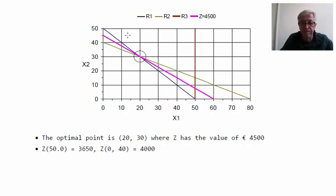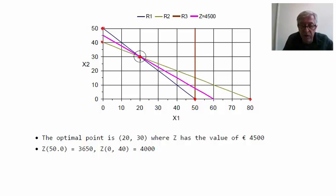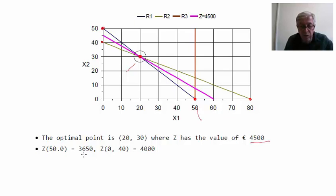In the solution domain, restriction 1 (in blue) intersects the axes at 50 each. Restriction 2 intersects at x2 = 40 and x1 = 80. The lines of Z confirm the optimal solution at the intersection of restrictions 1 and 2, giving Z = 4,500. At the other vertices, Z = 3,650 and Z = 4,000, so this is clearly the optimal solution.